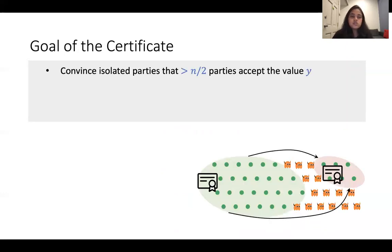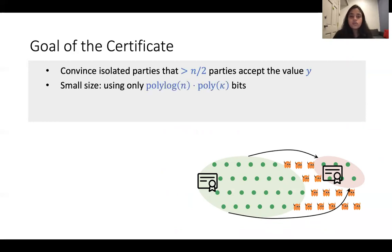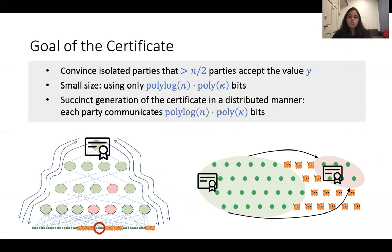We introduce a new primitive called succinctly reconstructed distributed signatures that allow us to generate small certificates and achieve optimal communication complexity. This certificate is used to convince isolated parties that a majority of honest parties already accept value Y. For communication optimality, we require the certificate size to be only polylogarithmic in the number of parties, and since the certificate is generated in a distributed manner, parties are only required to communicate polylog many bits throughout the generation and distribution process.